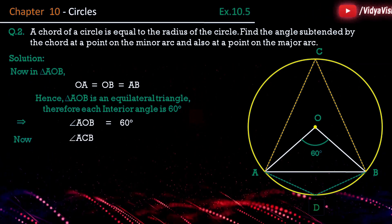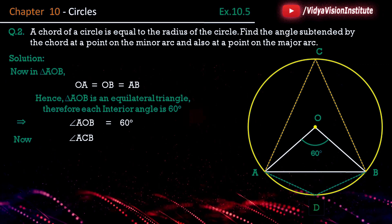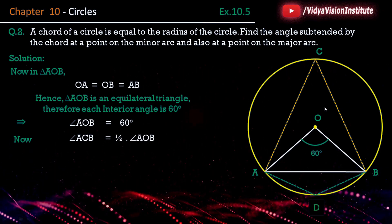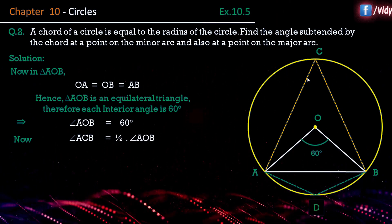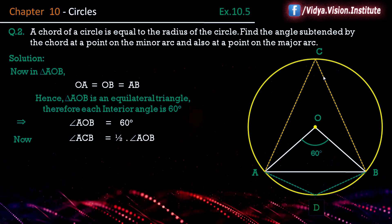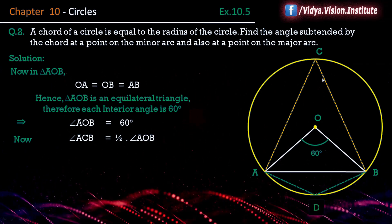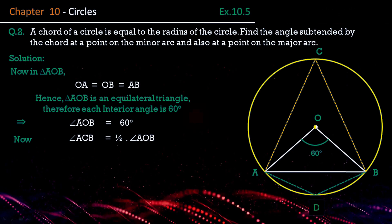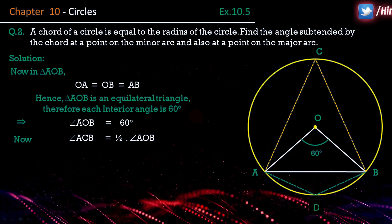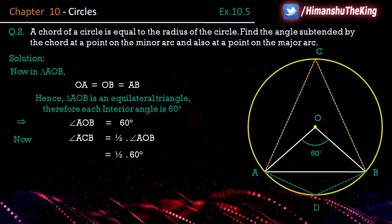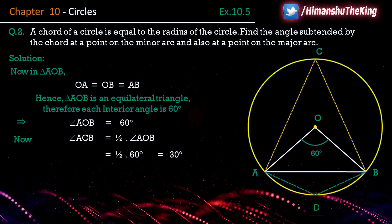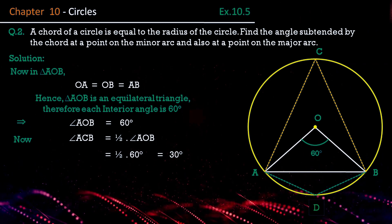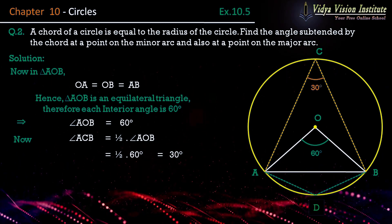Now angle ACB is equal to 1/2 of angle AOB, because the angle subtended at the centre is double the angle subtended at any point on the remaining part. Therefore angle ACB is equal to 1/2 of 60 degrees. Hence angle ACB is equal to 30 degrees.